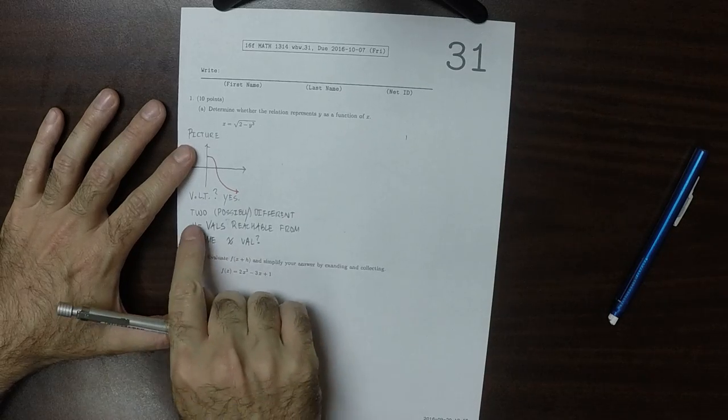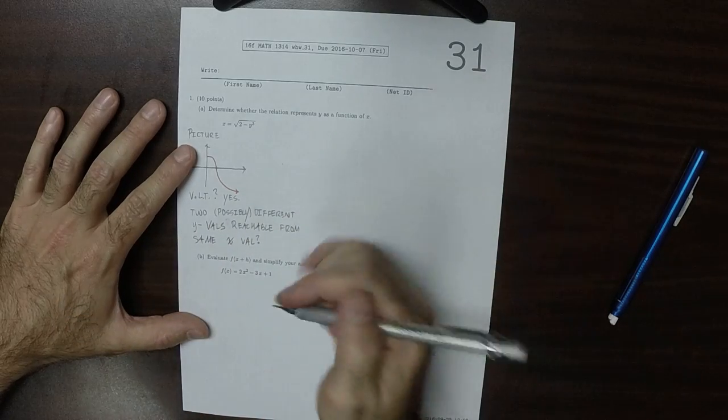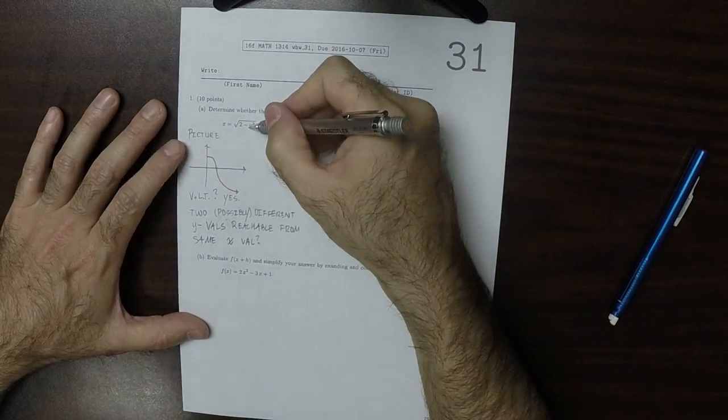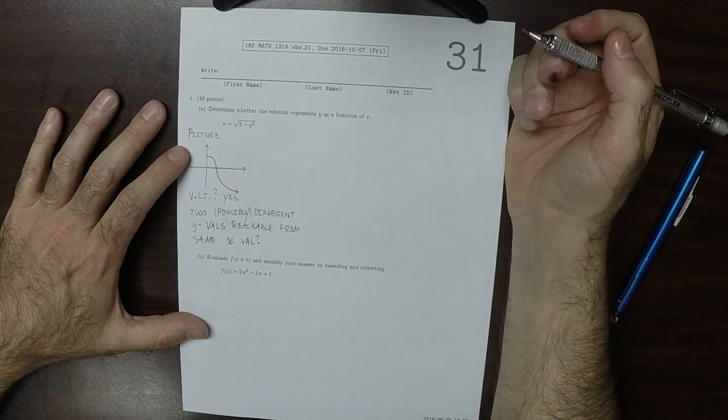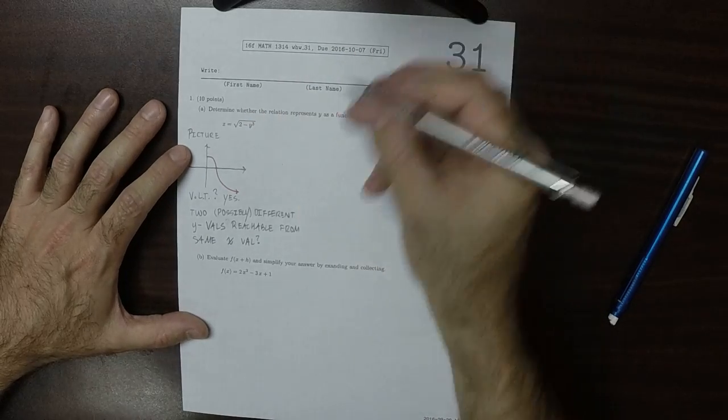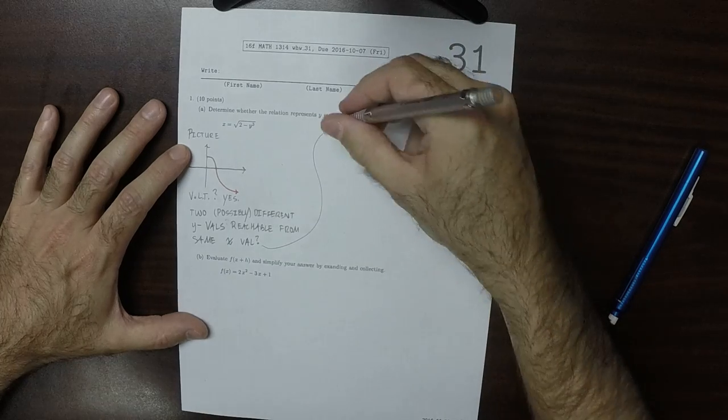So, if this was possible, if it was possible to reach two different y values from the same x value, that would mean that this does not represent y as a function of x.